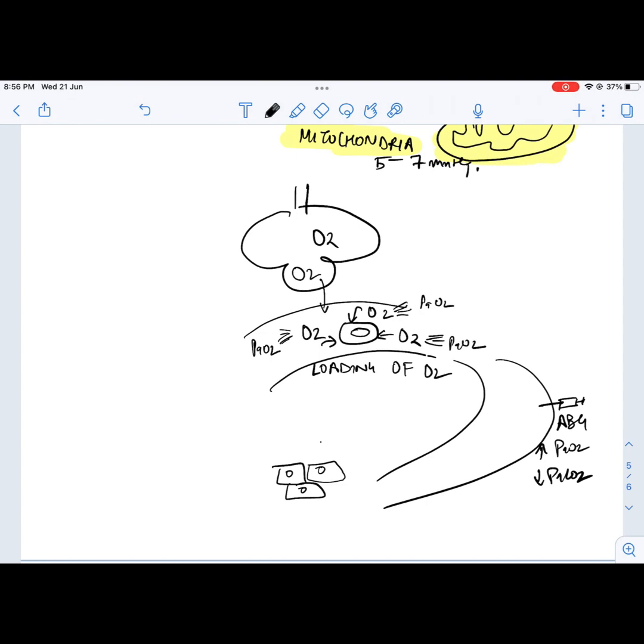At tissue site there is low PaO2 which makes oxygen come out of RBCs, also known as dissociation or unloading of oxygen, so that this oxygen can be utilized for energy making purposes.